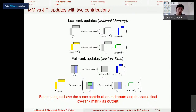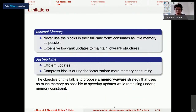To summarize: we have a strategy that consumes as little memory as possible but with expensive operations, and another strategy that performs efficient updates but needs more memory. The objective of this talk is to propose a memory-aware strategy that uses as much memory as available — staying below the machine's maximum memory — to speed up updates using the just-in-time approach as much as possible, while remaining under a given memory constraint and moving back to the minimal memory strategy if required.